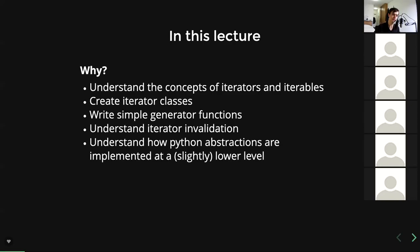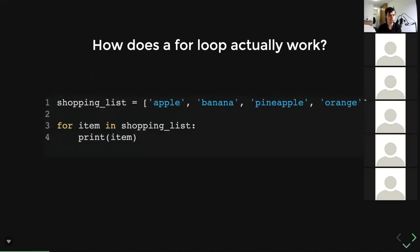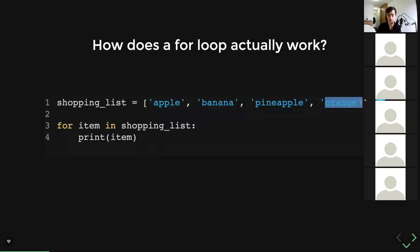So to start with, how does a for loop actually work? At the beginning of the course we said here's a for loop and here's a list of items that we can iterate over — 'for item in shopping_list: print(item)'. Really simple. And at a conceptual level you think, okay, this makes sense, because for item in shopping list, we look at apple, then banana, then pineapple, then orange, and then we're done. The question is, how does Python actually know how to traverse the list?